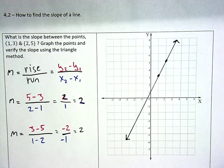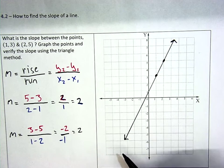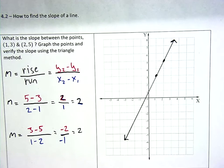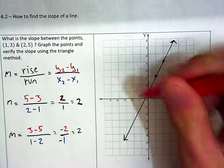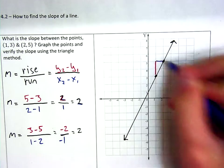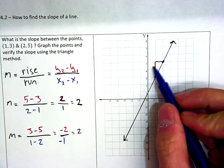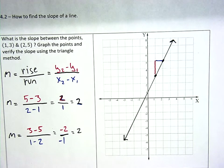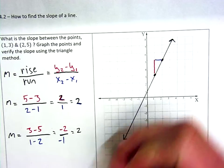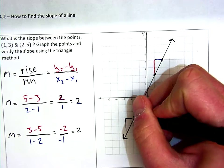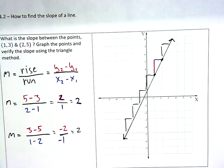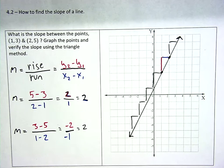The triangle method says I should be able to make right triangles — rise over run. Let's draw the right triangle. Using y as the rise, that's up 2, and over 1. Verified — from point to point, up 2 over 1. I should be able to do that from the bottom all the way to the top: up 2 over 1, up 2 over 1, up 2 over 1, up 2 over 1. And it works. That is our triangle method, and that is how you find the slope between two points.